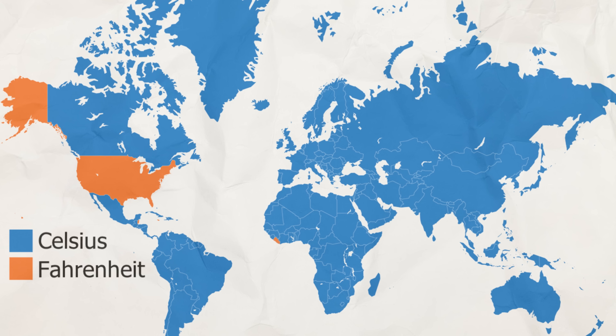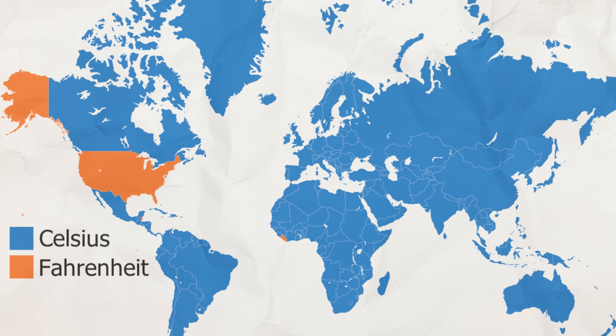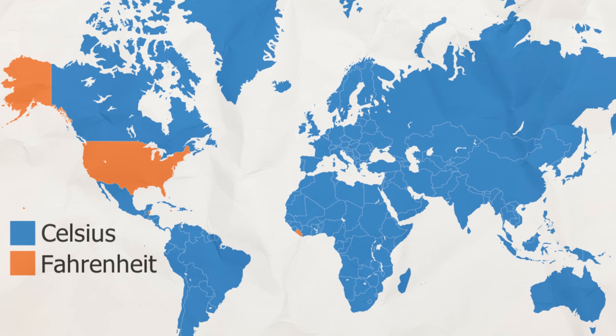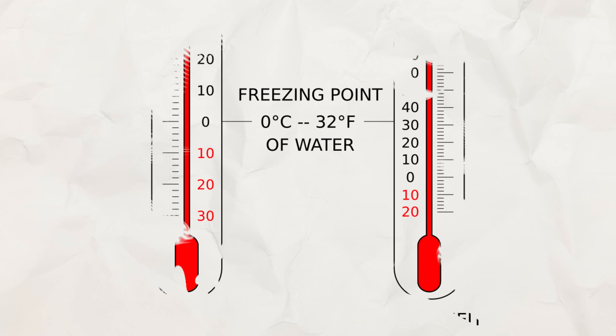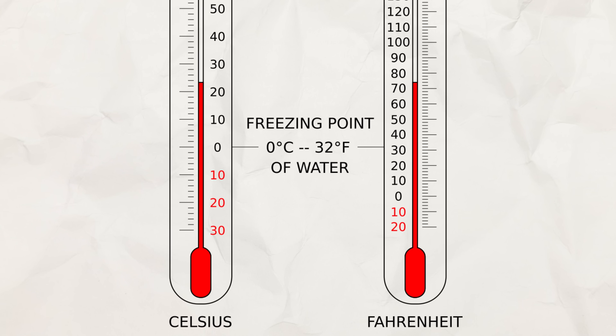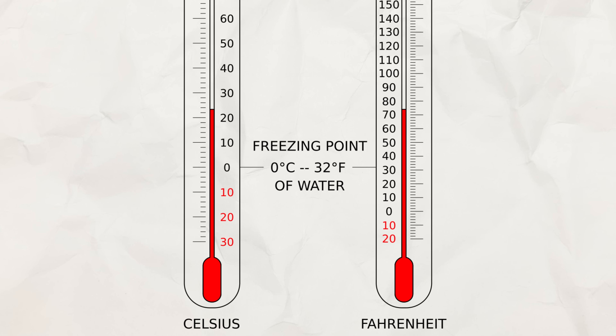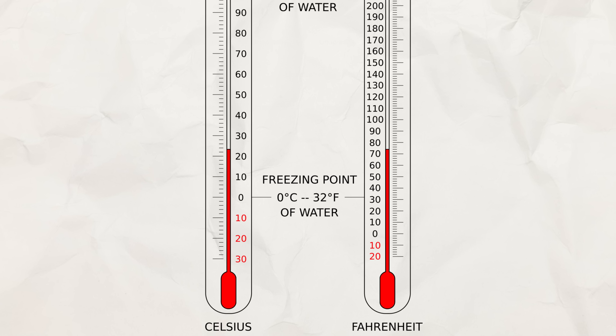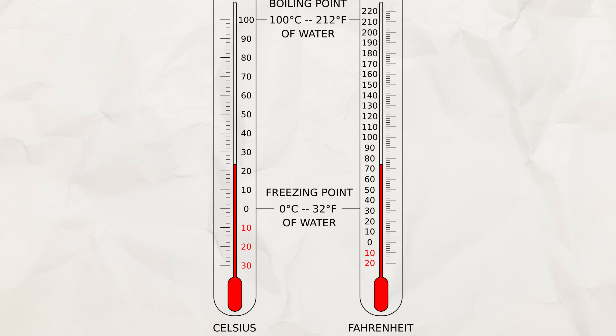Now let's move on to another difference, which for me is the most baffling of all — Fahrenheit versus Celsius — because in this case the US is pretty much the only country in the world that uses it, along with a few US-influenced Caribbean and Pacific islands and Liberia. The Celsius or centigrade scale is based around zero degrees being the freezing point of water and 100 degrees being the boiling point, while Fahrenheit measures the boiling point at 212 degrees and the freezing point at 32 degrees. The temperature measured is the same — it's just scaled differently.